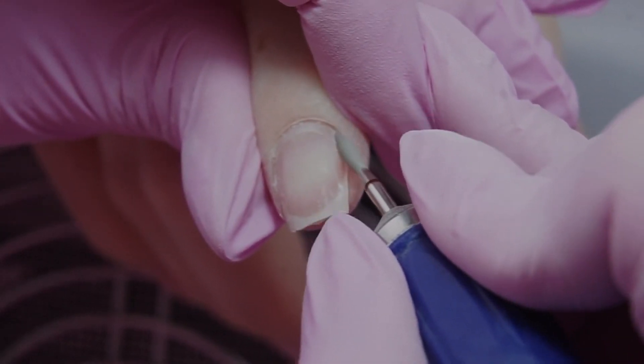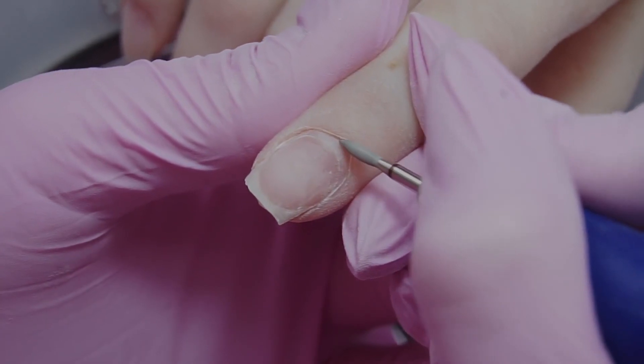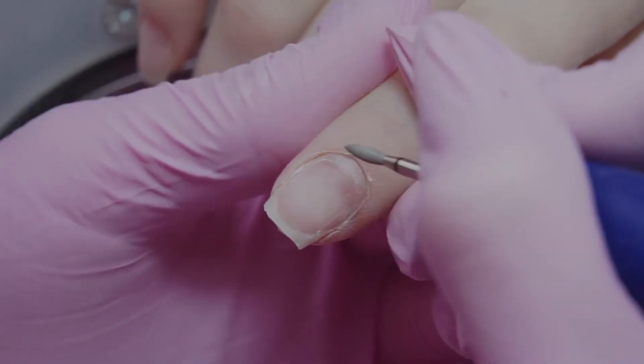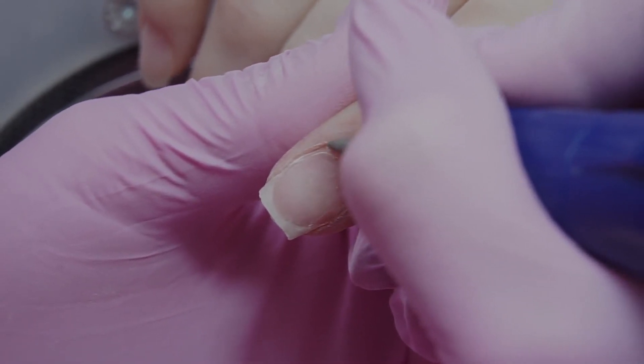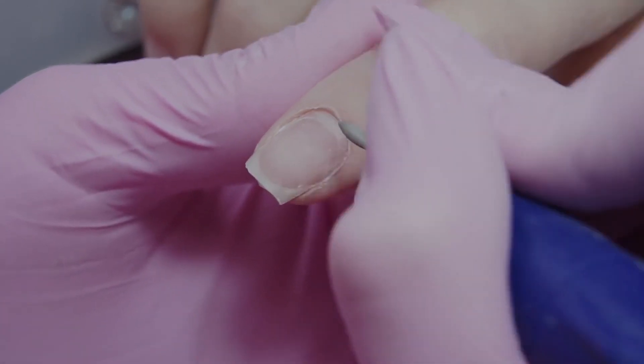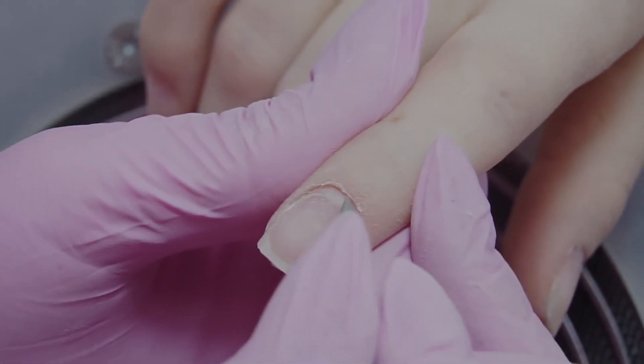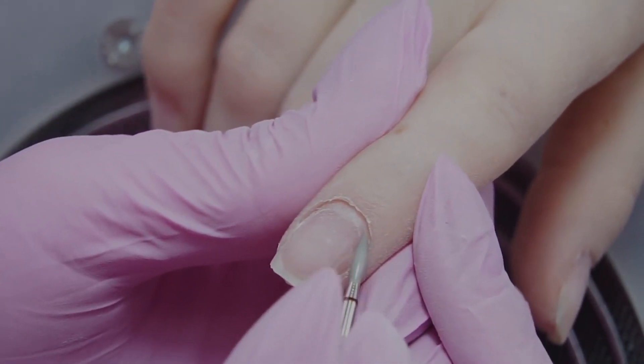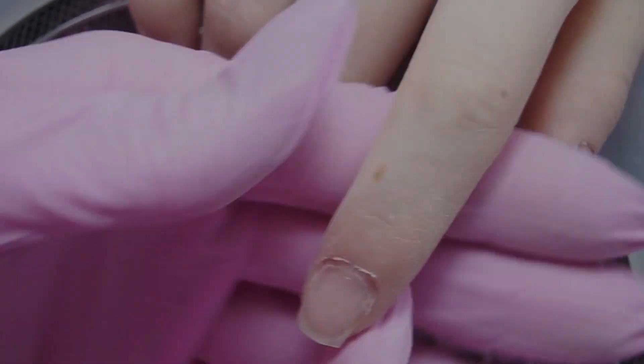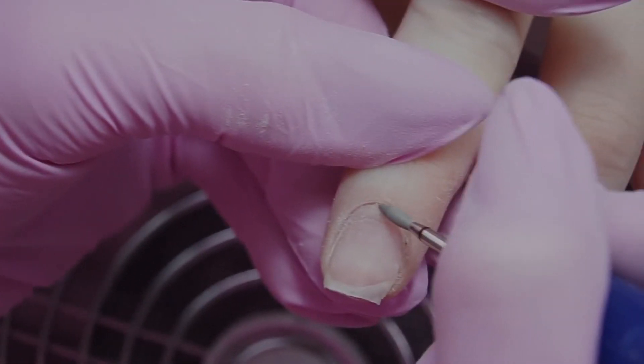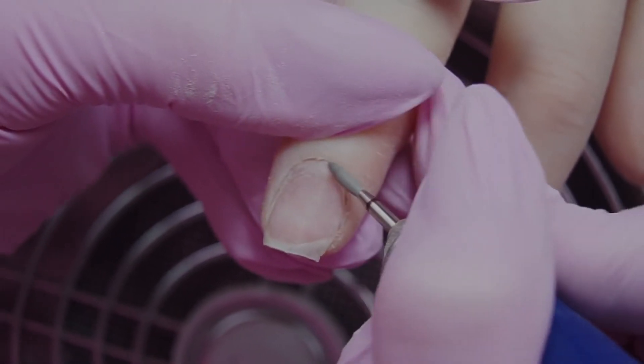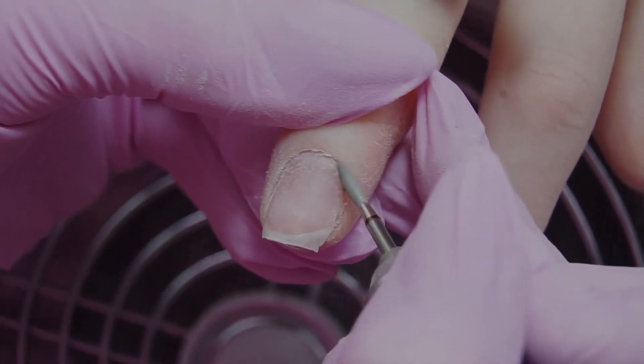Now, an important stage. I need to lift up the cuticle. To do this, I place the bit at an almost 90 degree angle to the nail plate and move with short strokes, lifting up the cuticle. During the first pass, I smooth it out, going deep under the cuticle. The bit stands parallel to the cuticle.